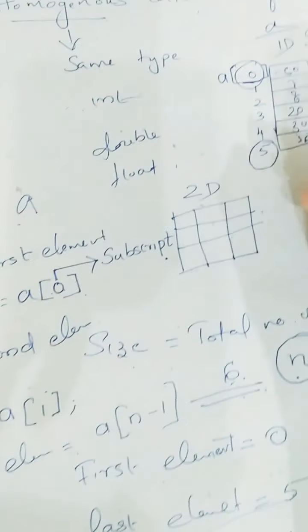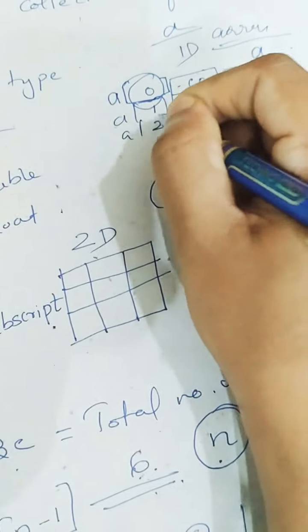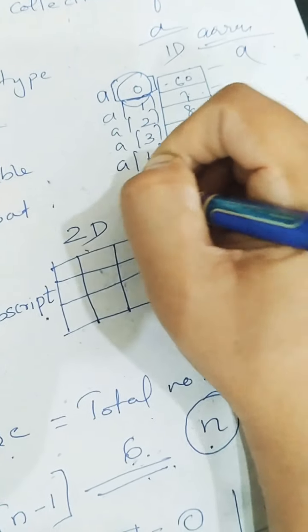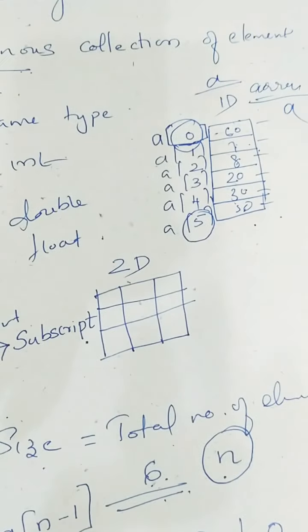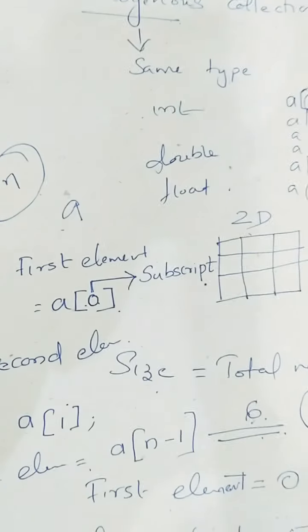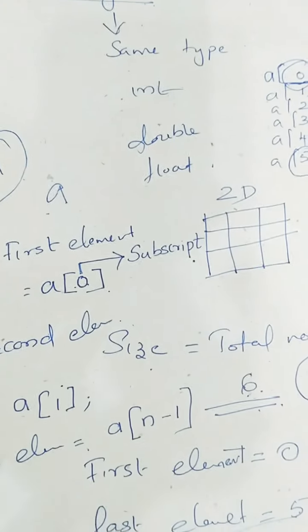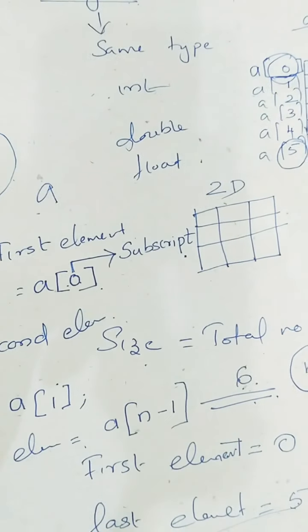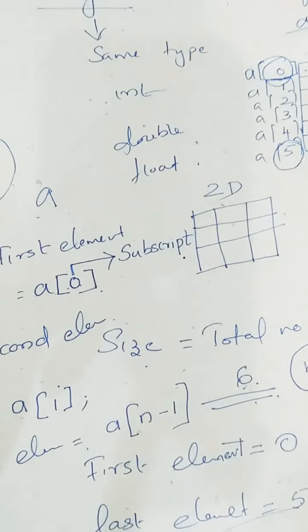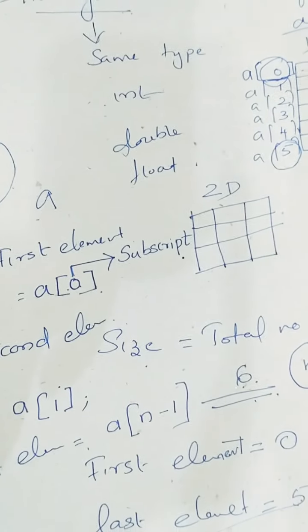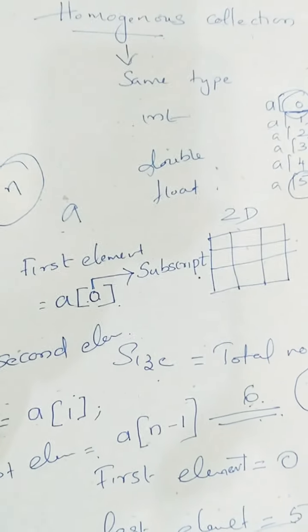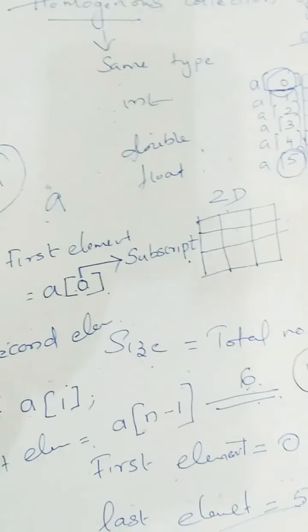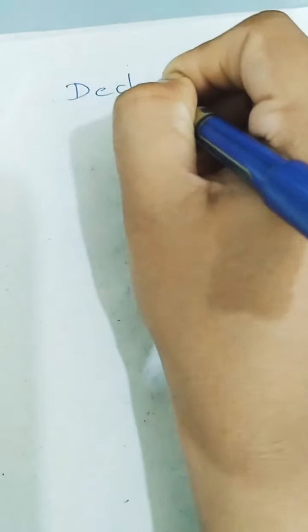So you can write a[0], a[1], a[2], a[3], a[4], a[5] — total 6 elements. An array starts with index 0, and if the array size is n, the last element's index is n minus 1. The array is represented by a common name. Now moving to the declaration of an array.